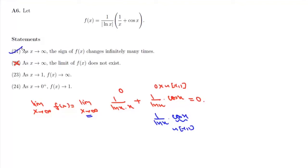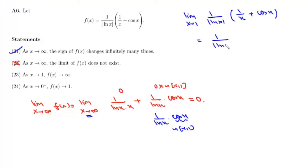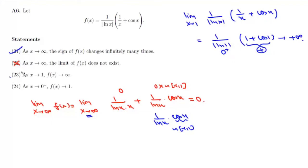Statement 23 says: as x tends to 1, f(x) tends to infinity. Taking the limit as x→1 of 1/(|log x| · (1/x + cos x)), we get 1/(|log 1| · (1 + cos 1)). Now 1 + cos 1 is positive, and log 1 = 0, so this becomes 1/(0⁺) = +infinity. Therefore Statement 23 is correct.